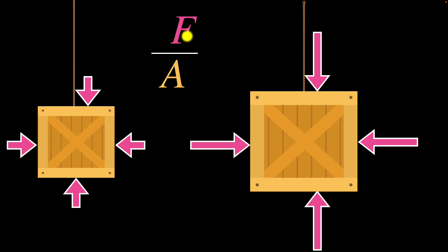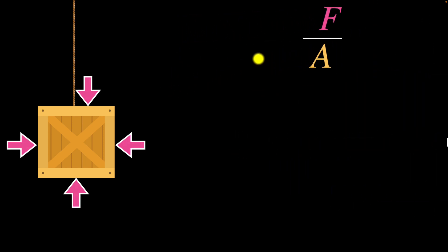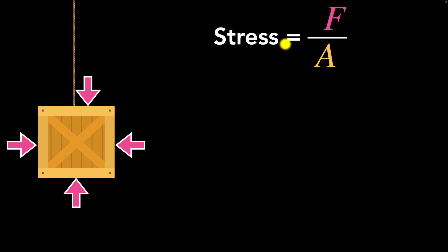That ratio — force per area — is what we call in general, stress. But what exactly is pressure? In our example, notice that the forces are not in some random direction. All the forces are perpendicular to the surface area. But how can we be so sure? These are random molecules bumping into it, right?